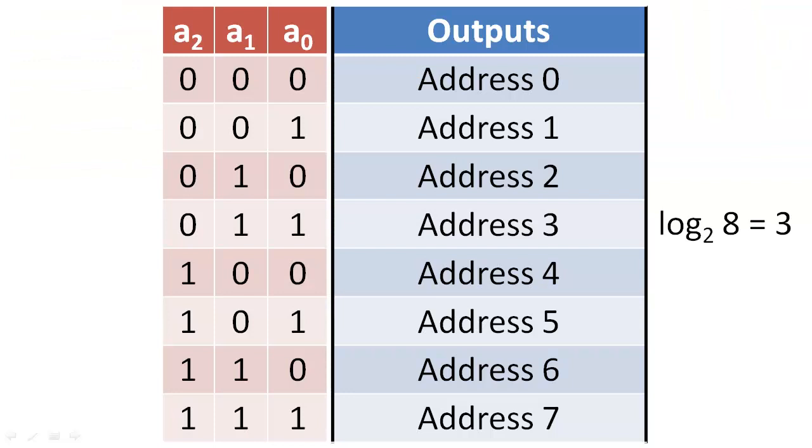Imagine with me that we need to manipulate a memory device that has eight memory addresses. To uniquely encode each address, we need three address bits. To make the addressing simple, we use unsigned binary numbers as our code for the addresses.